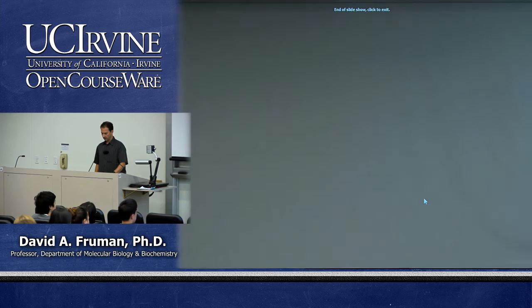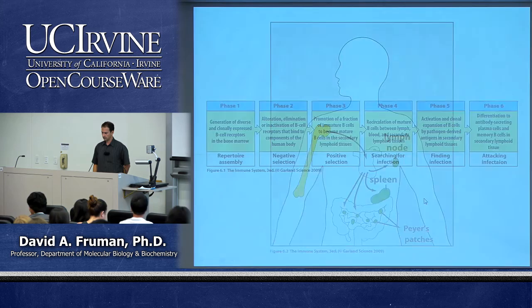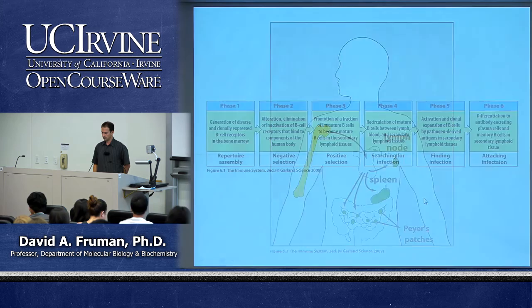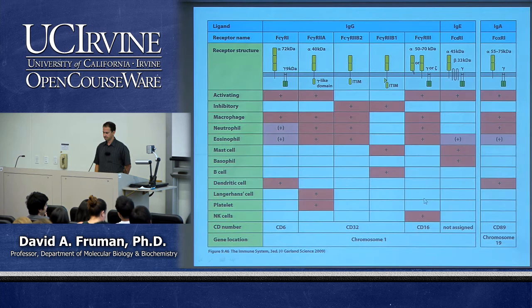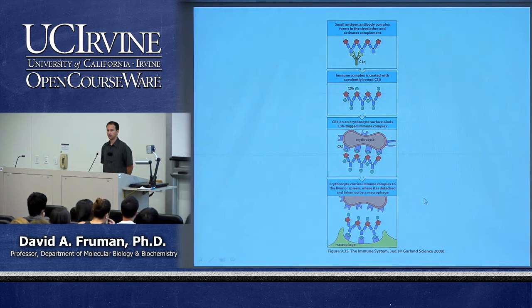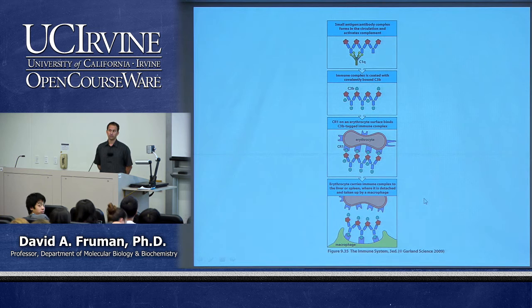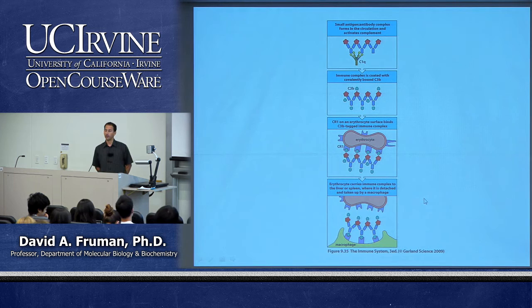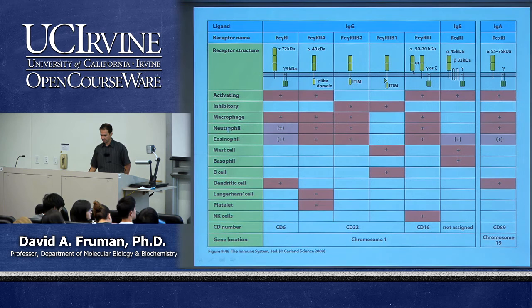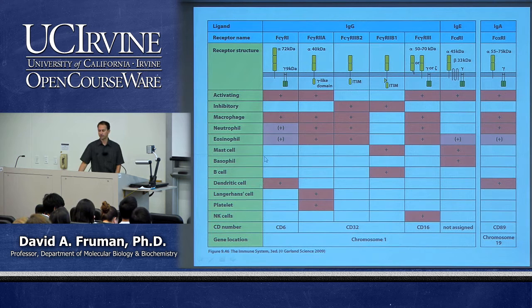Question: with regards to immune complexes, can monocytes — immature macrophages in the blood — deal with them, or do they need to be delivered to the liver for mature macrophages? I don't know the answer to that. I'm not sure if monocytes express the right FC or complement receptor. Looking at the table, it doesn't say anything specifically about monocytes and FC receptors. We'd really need to look at the complement receptor table, so I don't know.